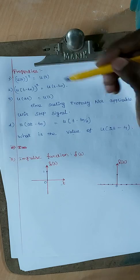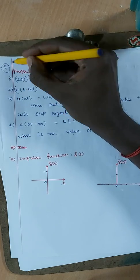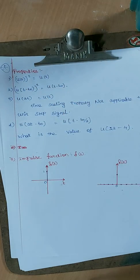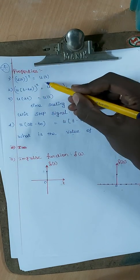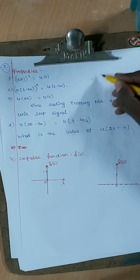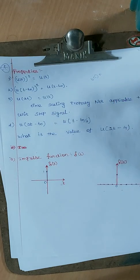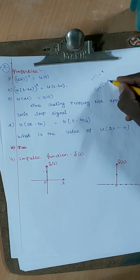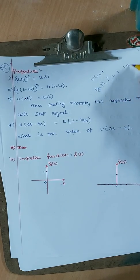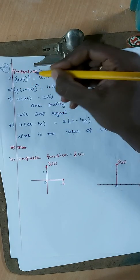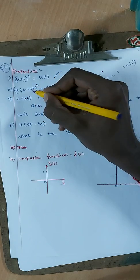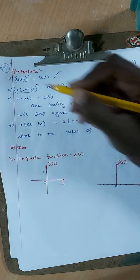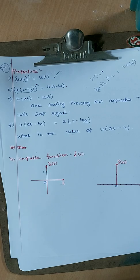The unit step function is very important. Its properties are important for exams. For u(t), the value is 1 when t ≥ 0. For u(t − t₀), the signal is shifted by t₀. There are properties like time shifting and time scaling to consider.